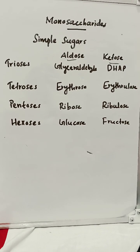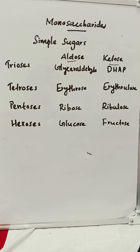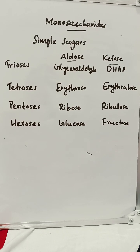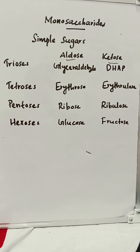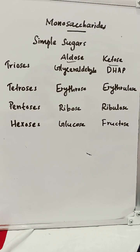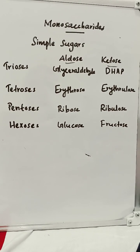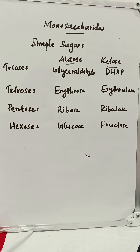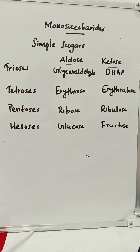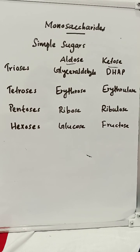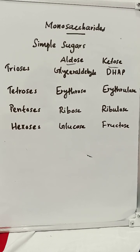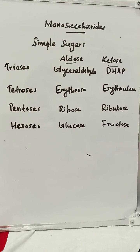Monosaccharides are also called simple sugars. Depending upon the number of carbon atoms, monosaccharides are subdivided into trioses, tetroses, pentoses, hexoses, etc. Depending upon the functional groups present, monosaccharides are subdivided into aldoses and ketoses. For example, glyceraldehyde and dihydroxyacetone phosphate.